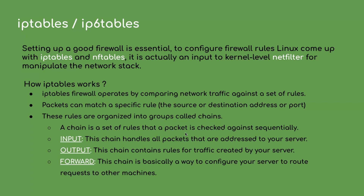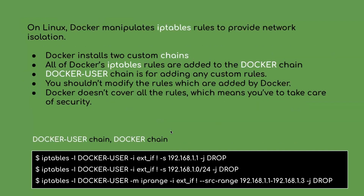Let us understand how Docker modifies IPtables to achieve network isolation. Docker installs two custom chains: the Docker chain and the Docker-user chain. To achieve network isolation, all of Docker's IPtables rules are added to the Docker chain, and we shouldn't modify these rules in any case. We can change the Docker daemon instance configuration to disable IPtables by setting the IP table flag to false, but we may encounter some network-related errors.